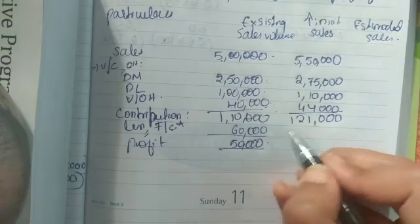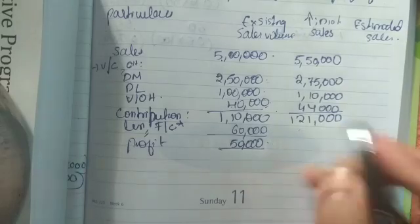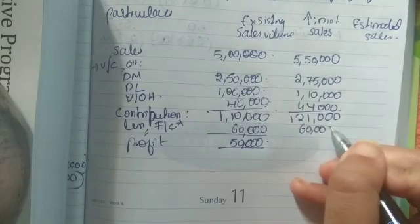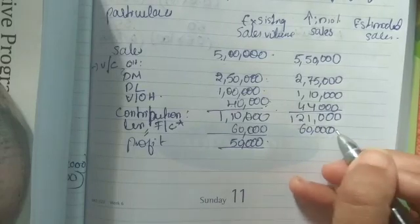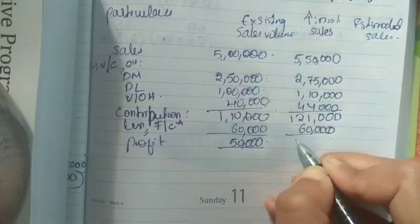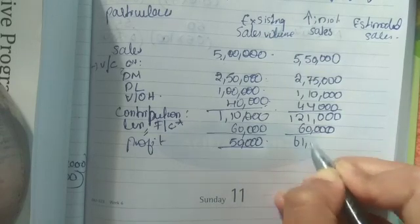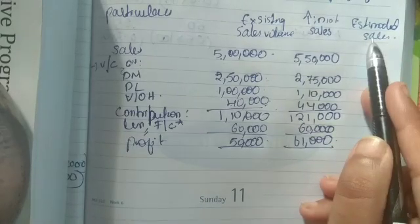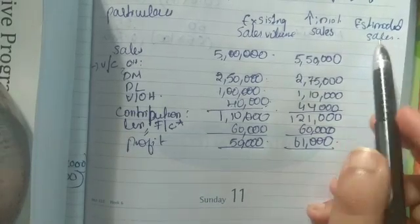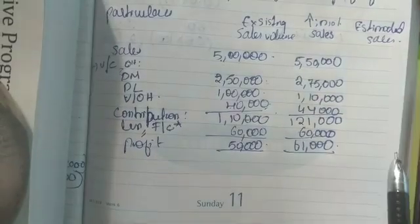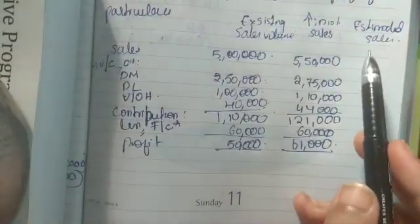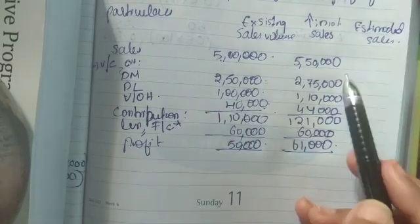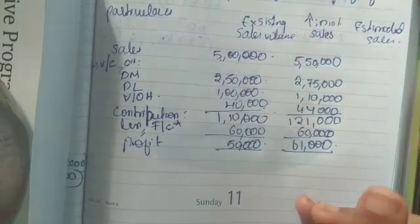Fixed cost remains the same for all scenarios irrespective of production. The profit for the second scenario is sixty one thousand. For the third scenario, the sales price per unit is increased by 4 percent and all costs will be reduced by 2 percent. So sales will be increased by 4 percent while all cost elements reduce by 2 percent.